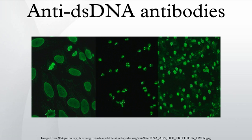Infection with viral pathogens can induce anti-dsDNA antibodies transiently. Human immunodeficiency virus, parvovirus B19 and BK virus are known to induce these antibodies. There is little evidence supporting the association between anti-dsDNA antibodies and other diseases. Occasionally the monoclonal proteins produced by myeloma patients can be anti-dsDNA, and some patients with type 1 autoimmune hepatitis also produce anti-dsDNA antibodies.